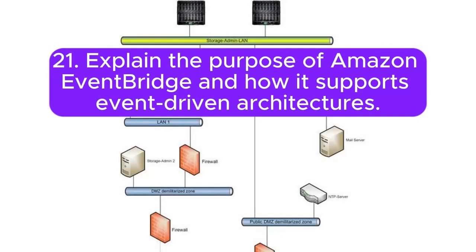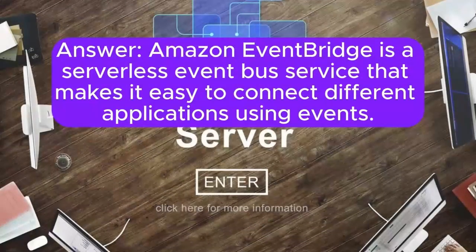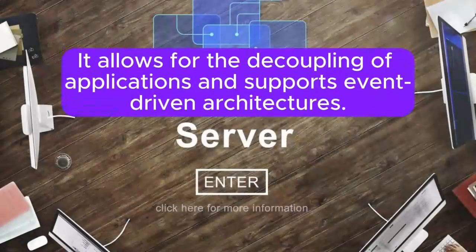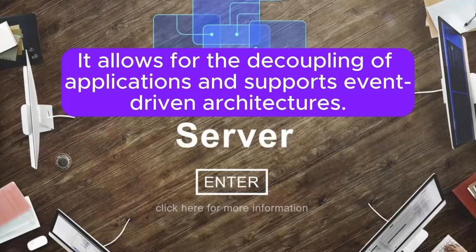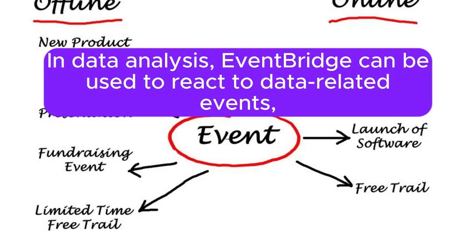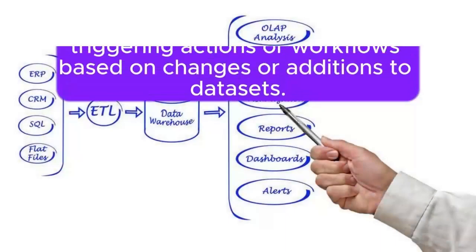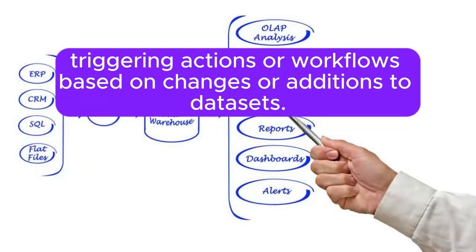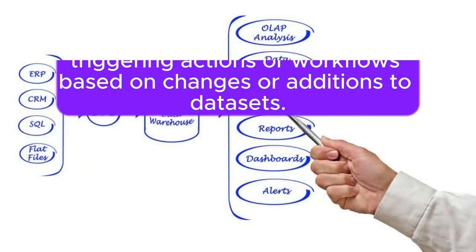21. Explain the purpose of Amazon EventBridge and how it supports event-driven architectures. Answer: Amazon EventBridge is a serverless event bus service that makes it easy to connect different applications using events. It allows for the decoupling of applications and supports event-driven architectures. In data analysis, EventBridge can be used to react to data-related events, triggering actions or workflows based on changes or additions to datasets.